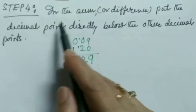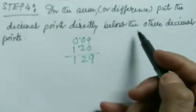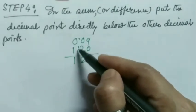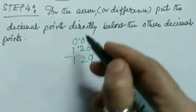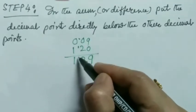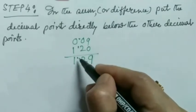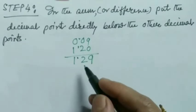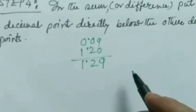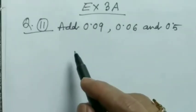Step number four: in the sum, put the decimal point directly below the other decimal points. Here you see two decimal points are in a line and I'll put this decimal point of my answer directly below this line, that means below the decimal points. So let's move ahead and solve some examples.